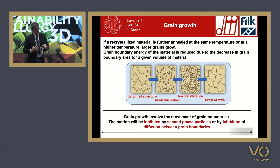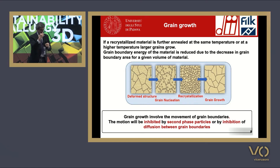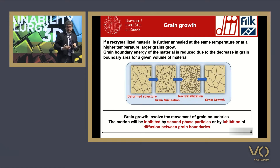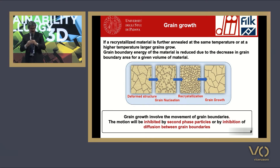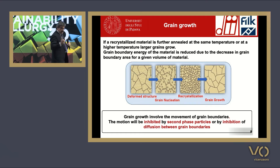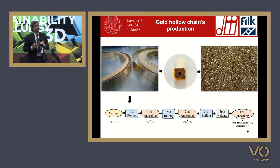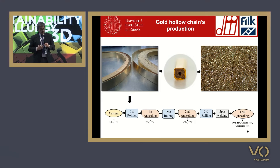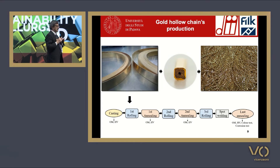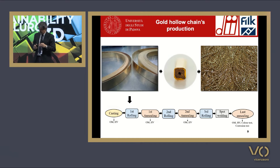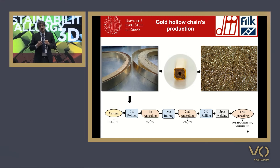Why is it necessary to use grain refiners? Because during solidification there are two steps. The first step is the formation of nuclei, called nucleation, and the other step is the growth of these nuclei to form all the solid material. In order to obtain nucleation, it is necessary to consider two energy terms: one negative, which is the volumetric free energy term from the passage from liquid to solid, and the other positive, which is the energy for creating an interface between solid and liquid.